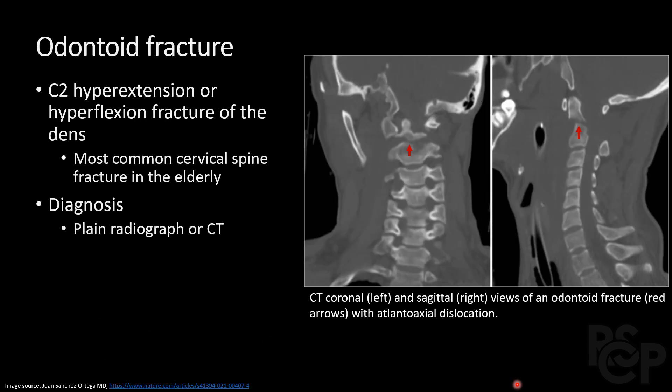Moving on to C2, we can have a fracture of the odontoid process, also known as the dens. It is commonly due to hyperextension or hyperflexion, and it is the most common cervical spine fracture in the elderly population. It is relatively easy to see if there is a large amount of displacement, as shown here.